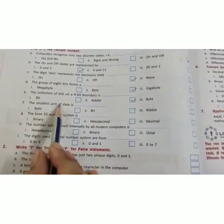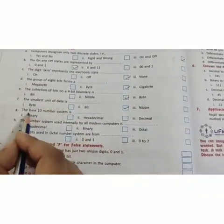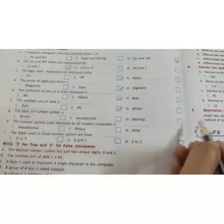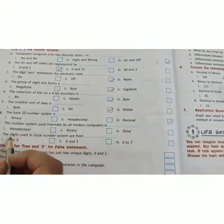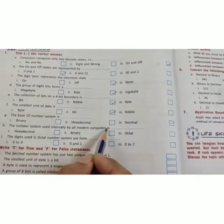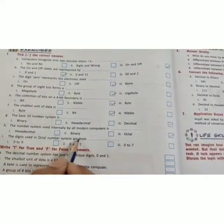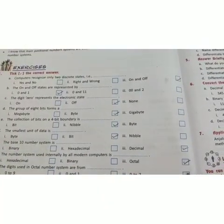The smallest unit of data is bit. The base 10 number system is decimal. The number system used internally by all modern computers is octal. The digits used in octal number systems are 0 to 7. Let's move to your true or false statement.